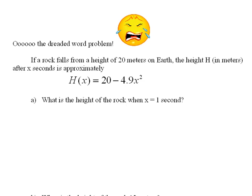Alright, here we're going to do the dreaded word problem, the application. So this one says, if a rock falls from a height of 20 meters on Earth, the height in meters after x seconds is approximately h of x equals 20 minus 4.9x squared.